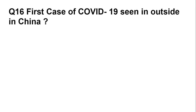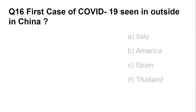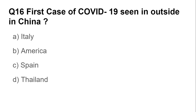Question number sixteen: The first case of COVID-19 seen outside China was in which country? Options are: Italy, America, Spain, and Thailand. The answer is Thailand.